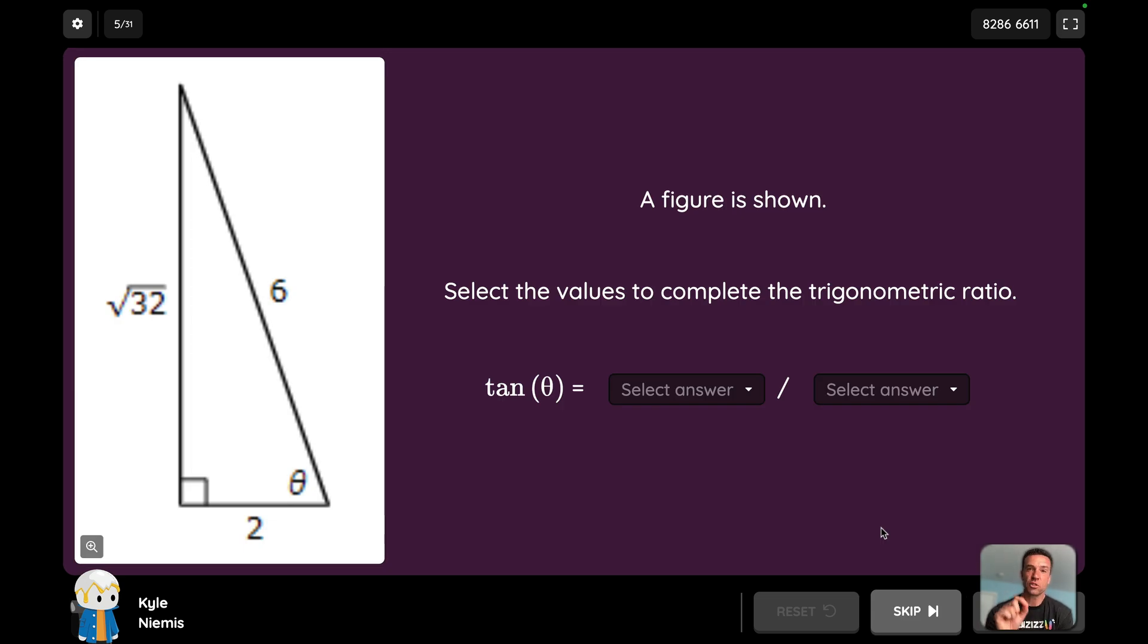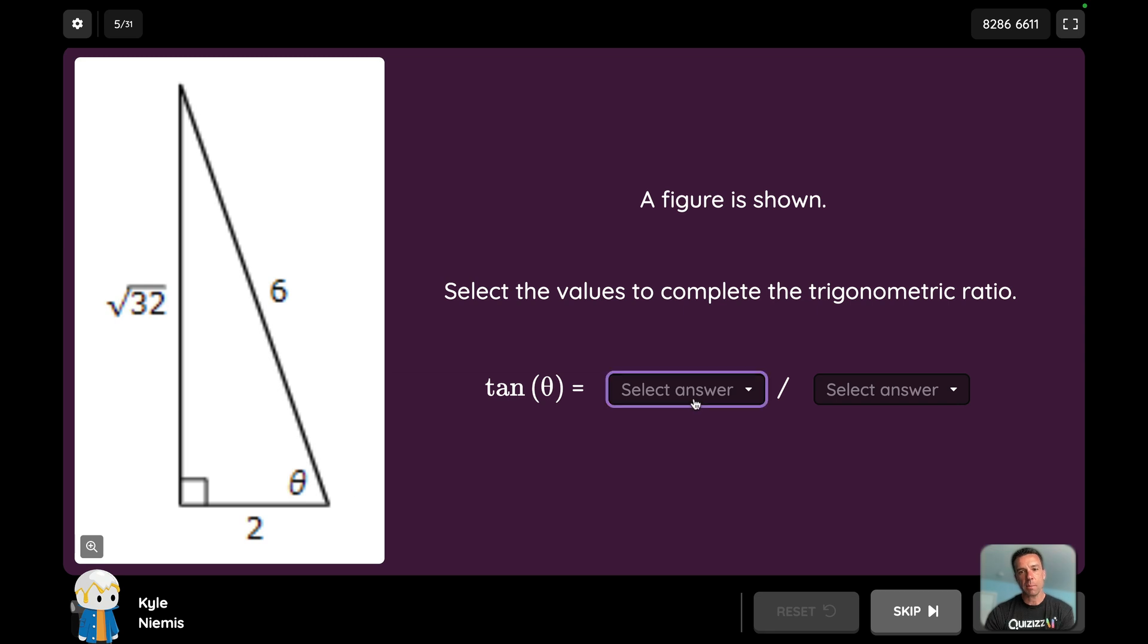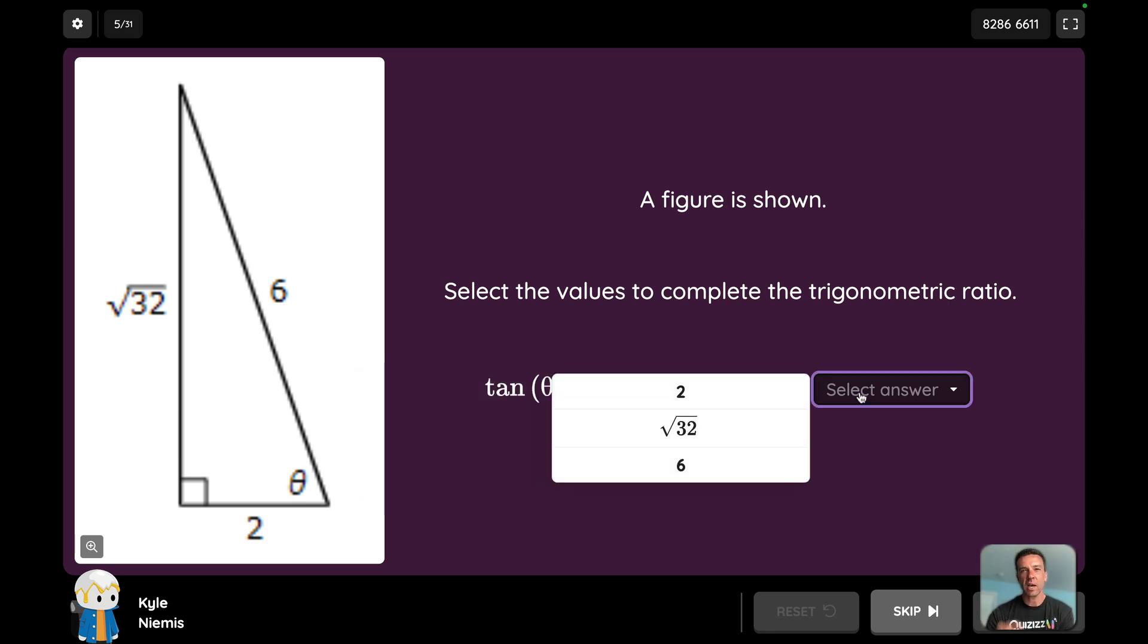This one here has an image in it but it's a drop-down question, which I love, because especially with tangent, right, opposite over adjacent, you would need the opposite over the adjacent, so it helps you pick two numbers or two components of a question.